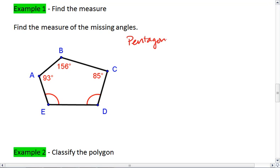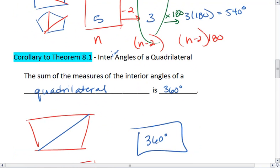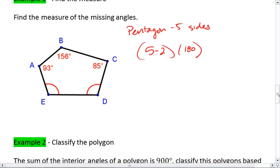We know we have a pentagon, which is five sides. Using our equation, we do 5 minus 2 times 180. This gives us 3 times 180, which tells us that the sum of the angles is 540 degrees.